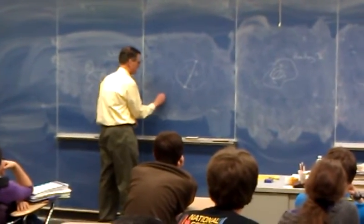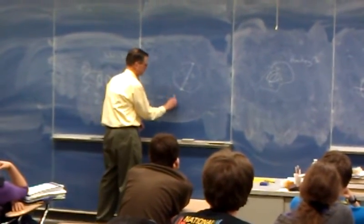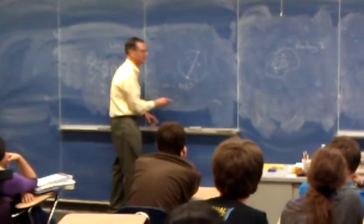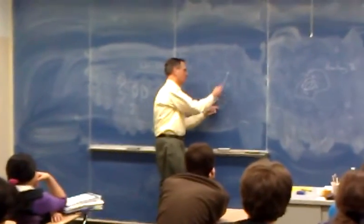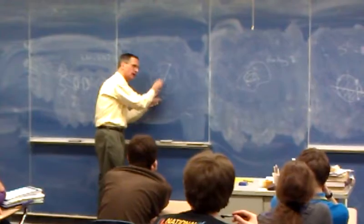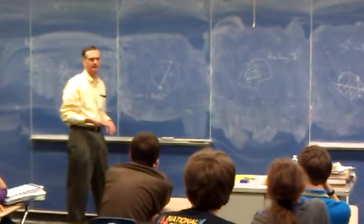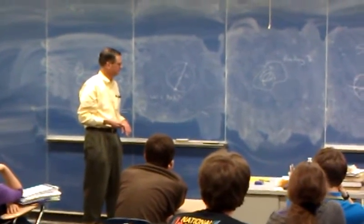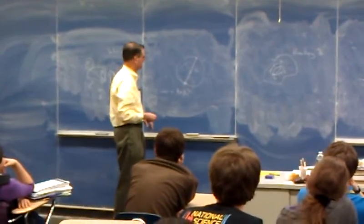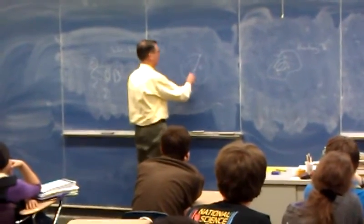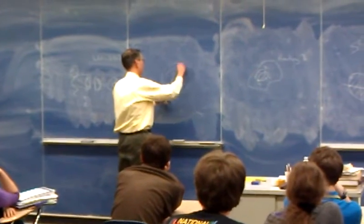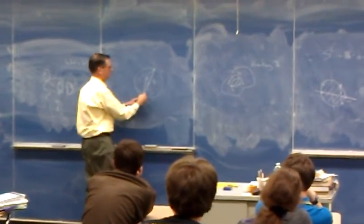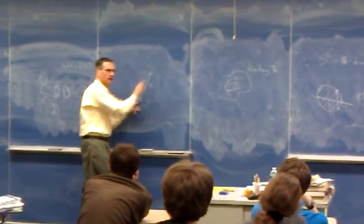But what is A times A? That means I'm going to go through the loop A and then I will repeat going through the loop A. Well, if I go twice, let me draw it this way. I'll go along A and then I'll go along A again.